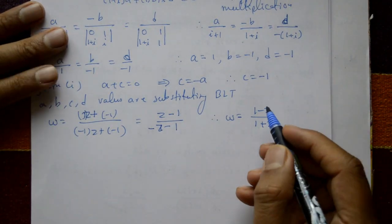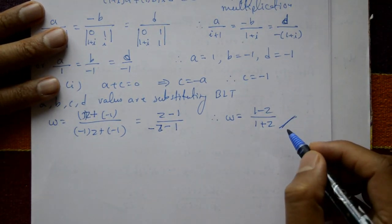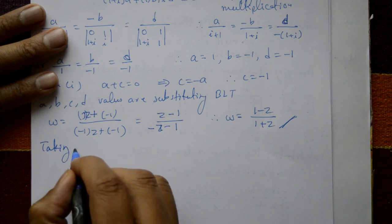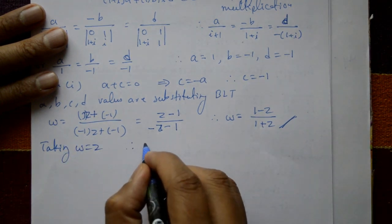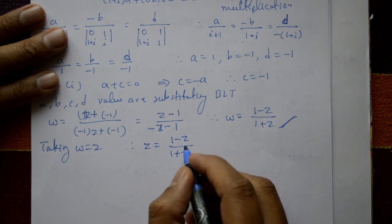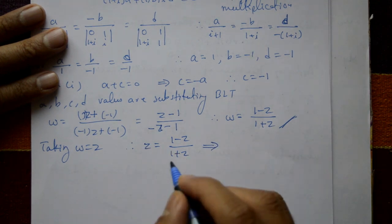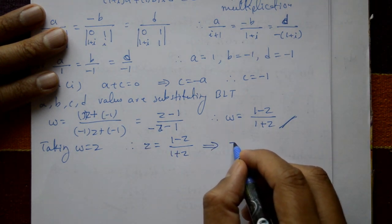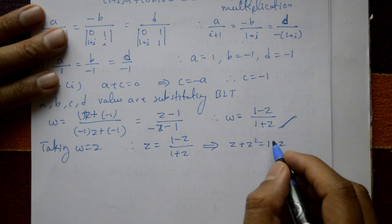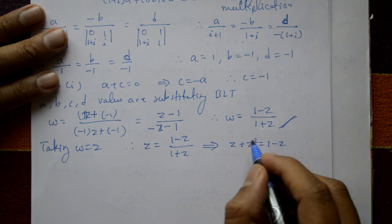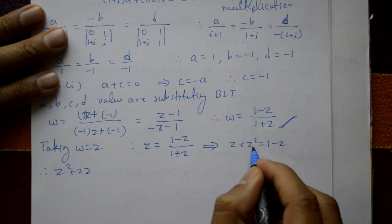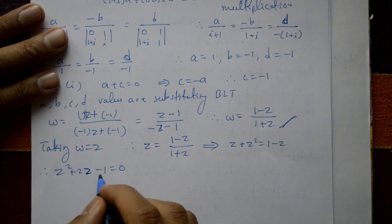Next, find the invariant points. For invariant points, put w equal to z. So z equals (1 minus z) / (1 plus z). Multiplying both sides: z plus z squared equals 1 minus z. Rearranging all terms to one side gives z squared plus 2z minus 1 equal to 0. This is a quadratic equation.